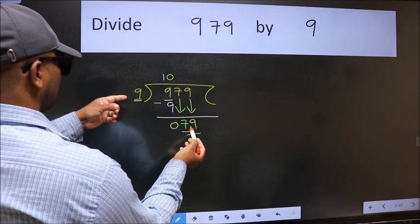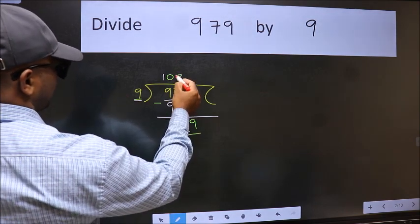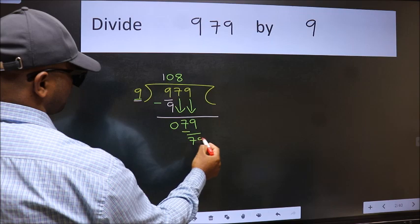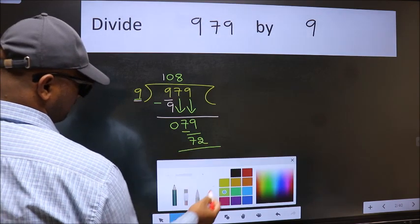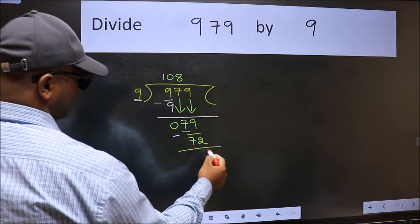A number close to 79 in the 9 table is 9 times 8, 72. Now we should subtract. We get 7.